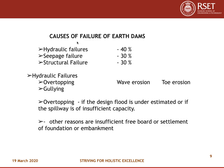Now let us look at the causes of failure of earth dams. Literature emphasizes that above 40% of failures are due to hydraulic failure, 30% is due to seepage, and the remaining 30% is due to structural failure. Types of hydraulic failure include: 1. overtopping, 2. wave erosion, 3. toe erosion, and 4. gullying.